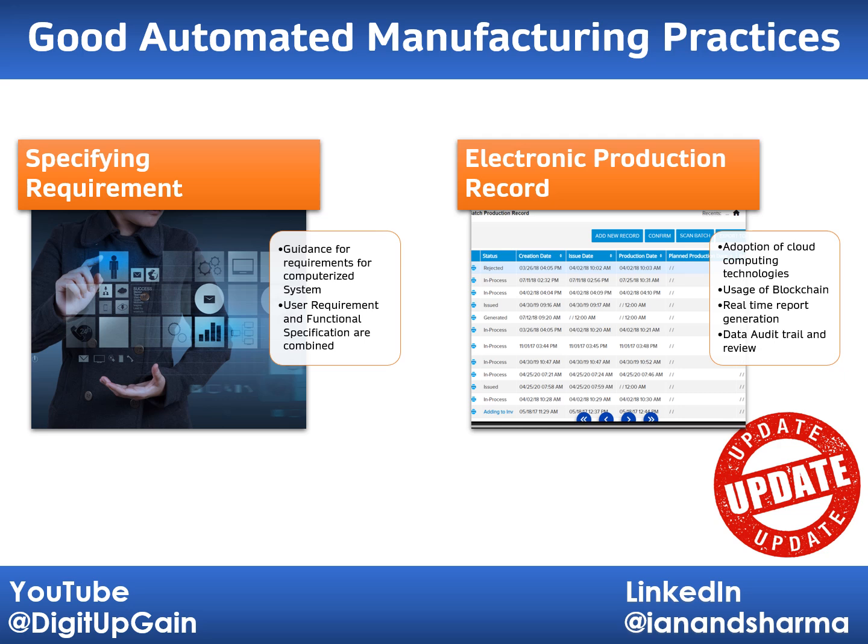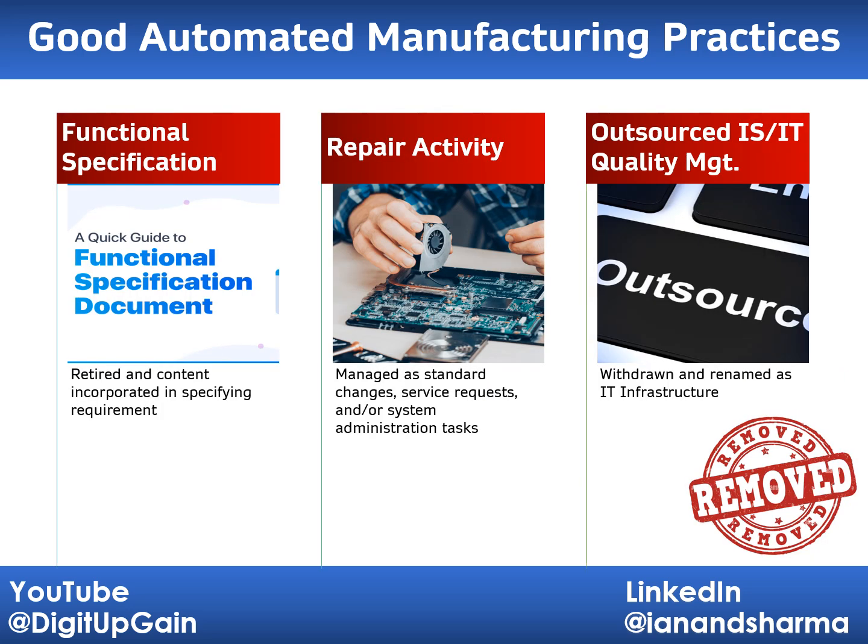The appendix also clarifies data audit trails and their review process. All three of these sections are removed from the 2nd edition: the content for functional specification has moved to Specifying Requirements; repairs managed as standard changes, service requests, or system administration tasks are now covered in operational change and configuration management; and IT Quality Management is now withdrawn, with updated content included in IT Infrastructure.